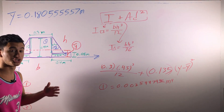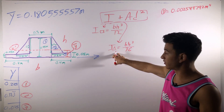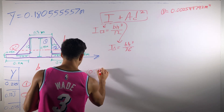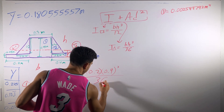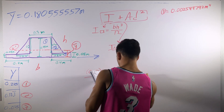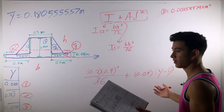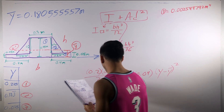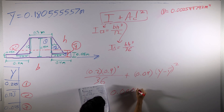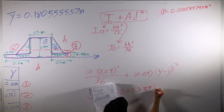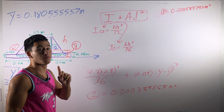Now let's find the moment of inertia of section two — a triangle, so we use base times height cubed over 36. The base is 0.2 and the height is 0.4, so: (0.2 × 0.4³) / 36, plus the area of that triangle (0.04) times d squared, where d is the difference between y-bar and y. When compiled, the moment of inertia for section two is 0.000355865 meters to the fourth.